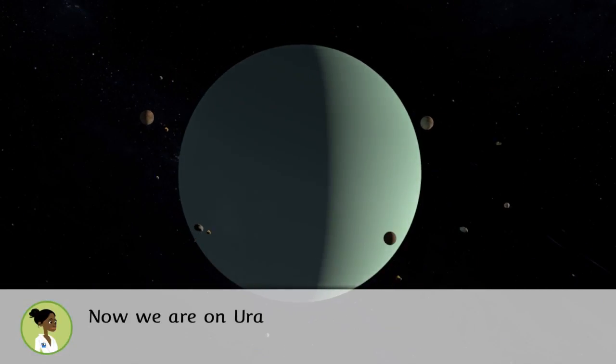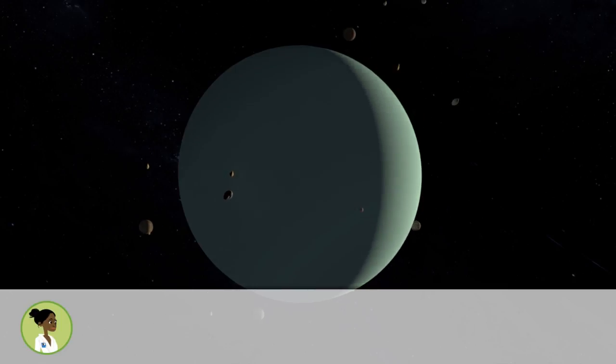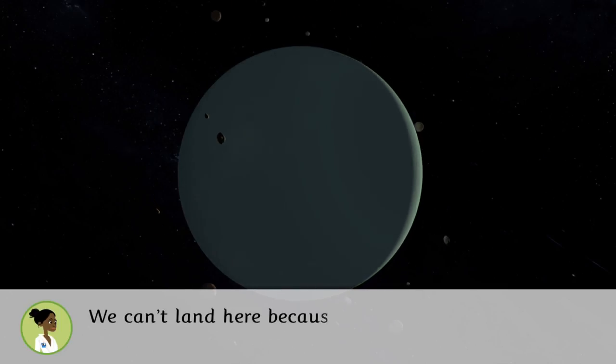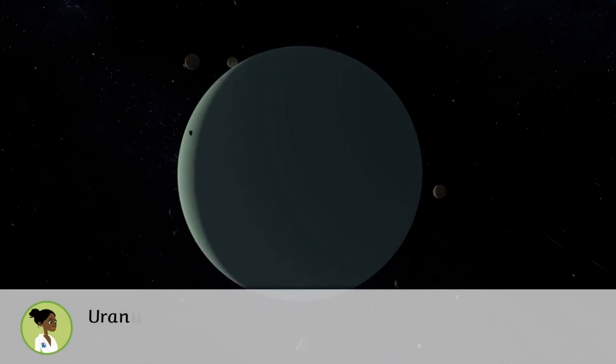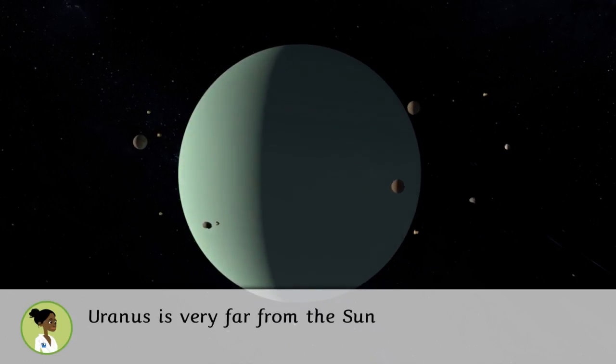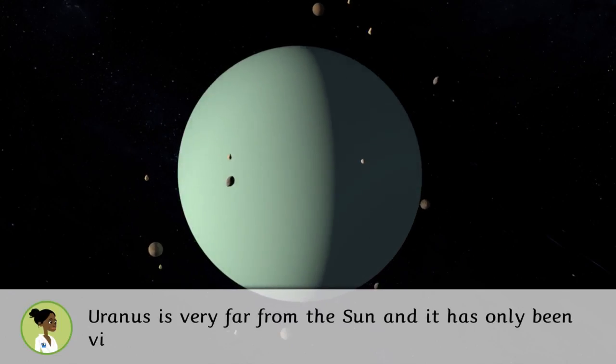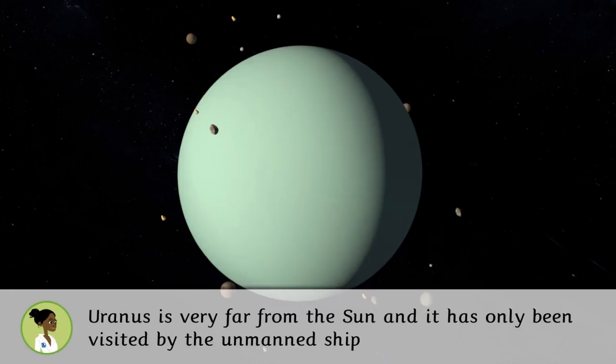Now we are on Uranus, the ice giant. We can't land here because it doesn't have a solid surface. It is made of gases and liquids. Uranus is very far from the Sun and it has only been visited by the unmanned ship Voyager 2.